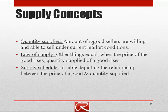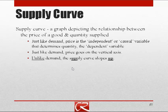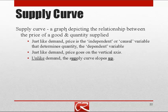The law of supply is the idea that, all else equal, when the price of the good rises, sellers will be willing to sell more — or more formally, quantity supplied rises. A supply schedule is a table depicting the relationship between the price of the good and the amount supplied. We then usually turn that into a picture by drawing a supply curve, which is a graph depicting the relationship between the price of a good and the quantity supplied.